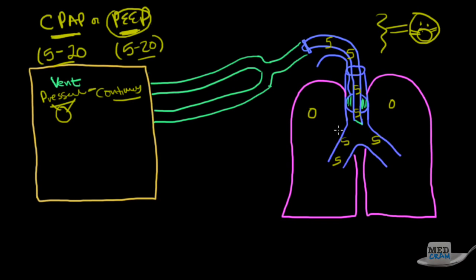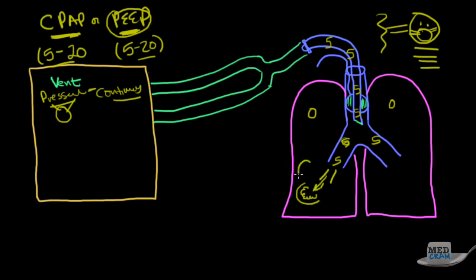You're breathing in and out with the same pressure. In the non-invasive mode, this is beneficial for obstructive sleep apnea because the pressure keeps your tongue forward and your airway open. In invasive ventilation, PEEP — positive end expiratory pressure — is very good at keeping those alveoli open and recruited. You can increase the PEEP on the ventilator using its own dial to keep those alveoli open.